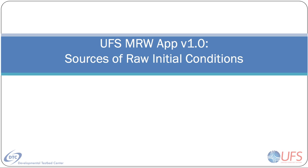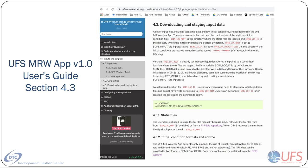The Unified Forecast System medium-range weather application version 1.0 uses meteorological analysis as raw initial conditions to make forecasts. In this video, you will learn about sources of raw initial conditions that are compatible with this application. The information discussed here is also available in the app's user's guide.